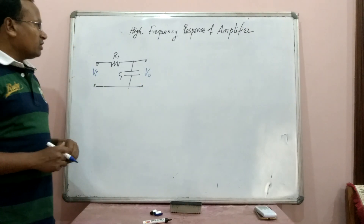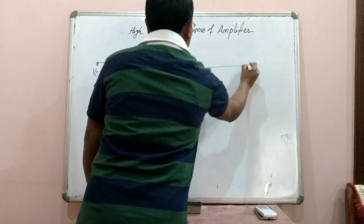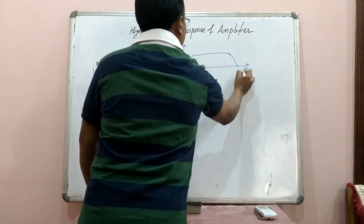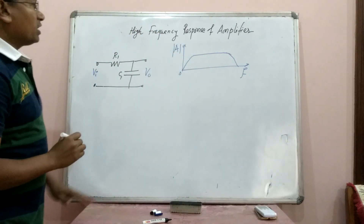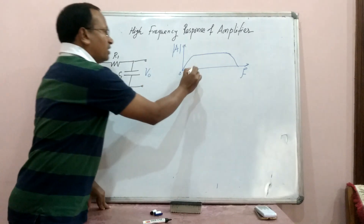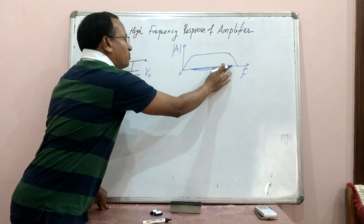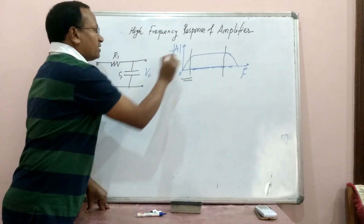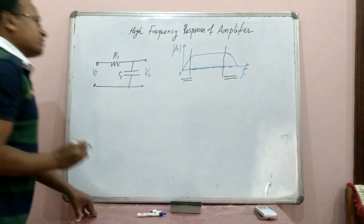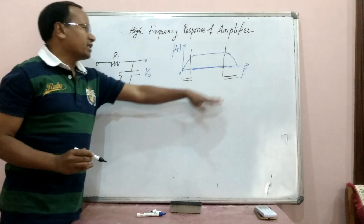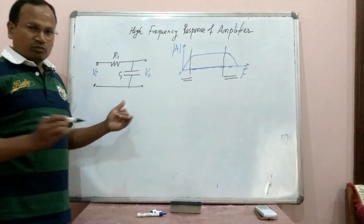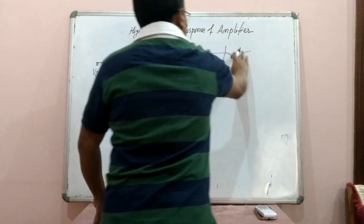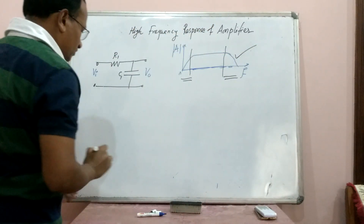When we see the response of an amplifier, we plot frequency on one axis and the amplitude of gain G on the other. We can see that in the middle frequency range there is a certain nature of response. At the lower frequency side there is a nature of response, and at the high frequency side there is also a nature of response. So let us study how an amplifier responds to the input signal at low and high frequencies. Here we are discussing the high frequency response.